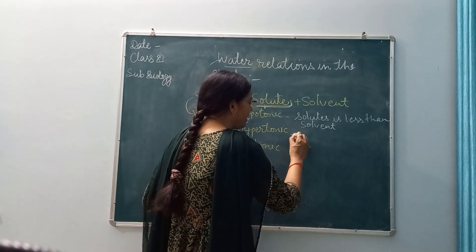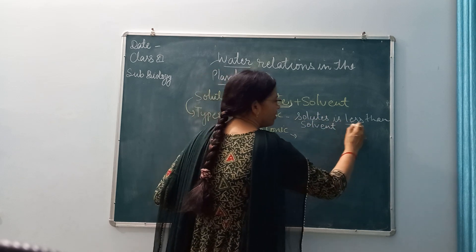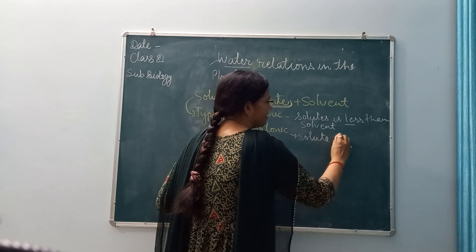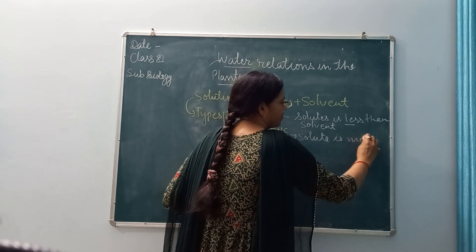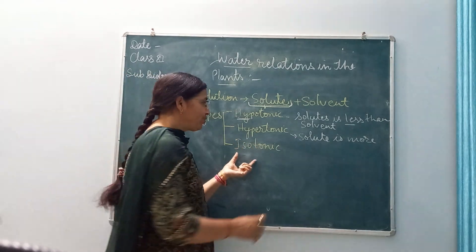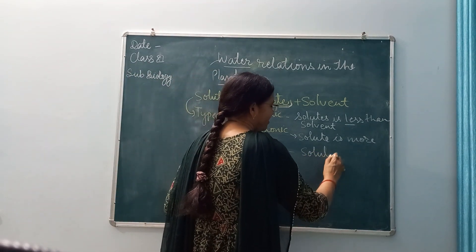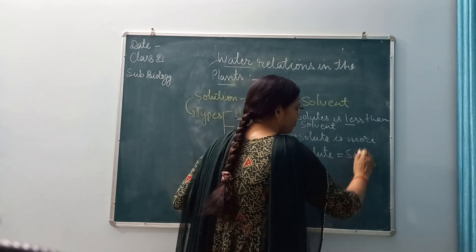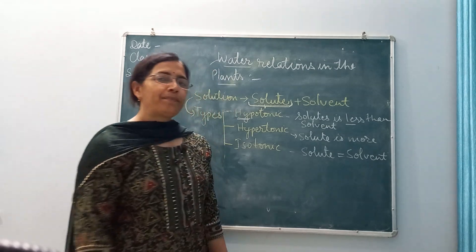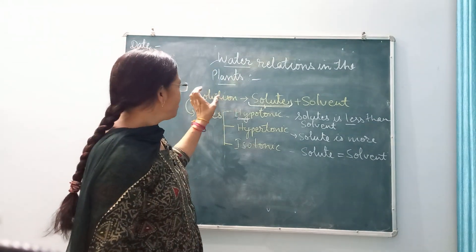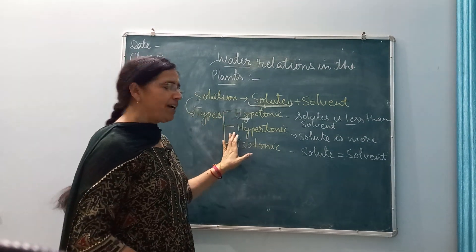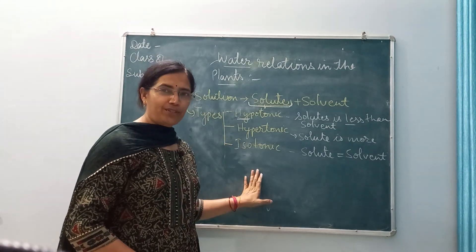Next is hypertonic — same idea, only the word changes. When solute is more than solvent, it is a hypertonic solution. And isotonic is where the solute equals the solvent. Let's repeat these terms once again: hypotonic, hypertonic, and isotonic. These must be clear before learning the different processes.